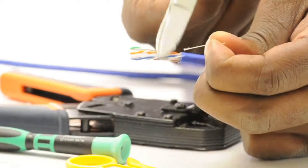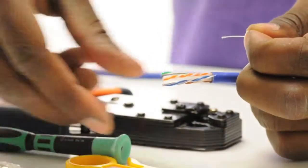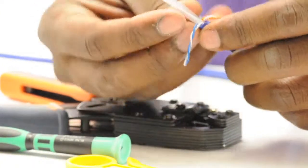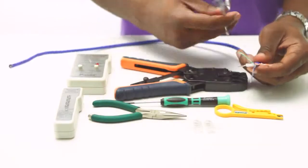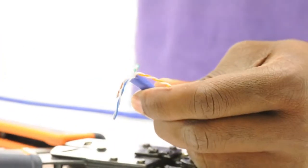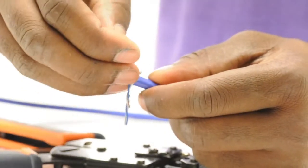Taking my scissors, I can remove the pull string and also the spline. This allows easy access to the conductors.